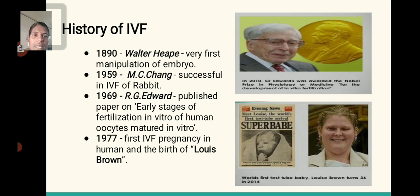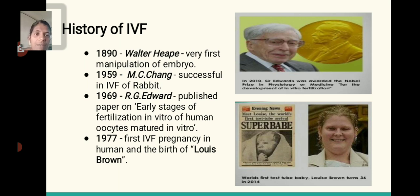History: In 1890, Walter Hamm performed the first manipulation of an embryo. In 1959, M.C. Chang was successful in in vitro fertilization of a rabbit. In 1969, R.G. Edwards published a paper on the early stage of fertilization of in vitro human oocytes. In 1977, the first in vitro fertilization pregnancy in a human resulted in birth — Louise Brown.